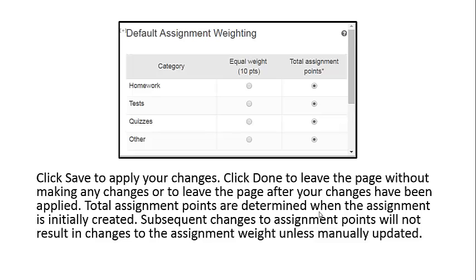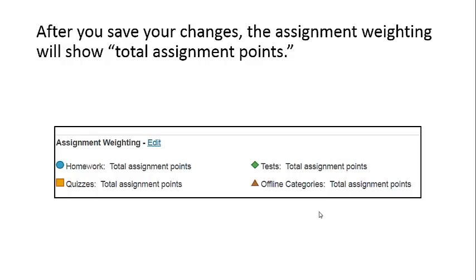Total assignment points are determined when the assignment is initially created. Subsequent changes to assignment points will not result in changes to the assignment weight unless manually updated. After you save your changes, the assignment weighting will show total assignment points.